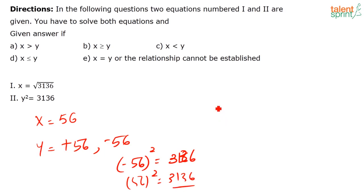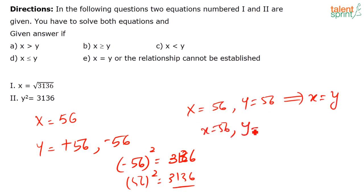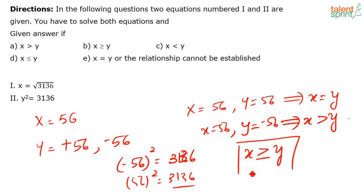If x = 56 and y = 56, then x = y. If x = 56 and y = −56, then x > y. So in general, x is greater than or equal to y — that is option B. Whenever a question comes with a square like this, always check carefully before writing the answer. It may take a few extra seconds but that's better than making a mistake.